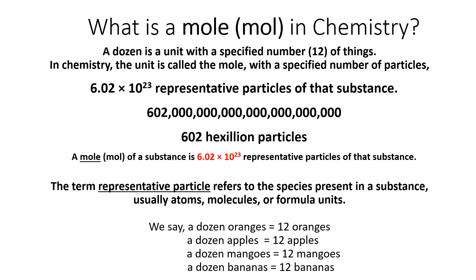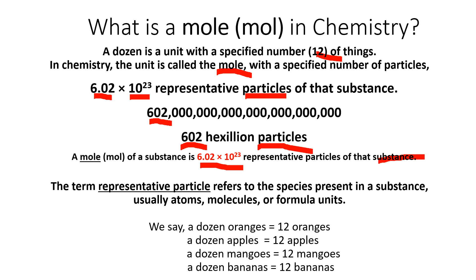What is a mole in chemistry? A dozen is a unit with a specified number — 12. In chemistry, the unit is called the mole, with a specified number of particles: 6.02 times 10 to the 23rd representative particles, also called 602 hexillion particles. A mole of a substance is 6.02 times 10 to the 23rd representative particles of that substance — which can be atoms, molecules, or formula units.